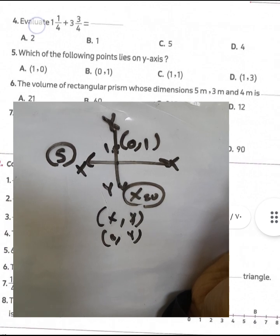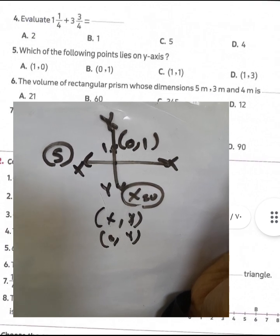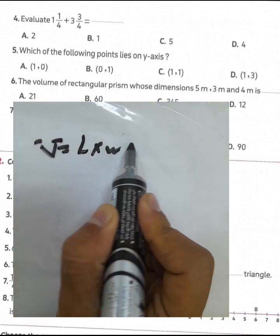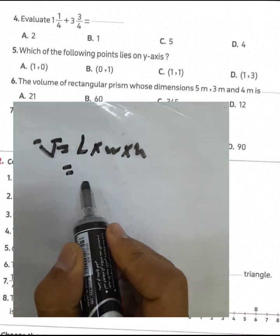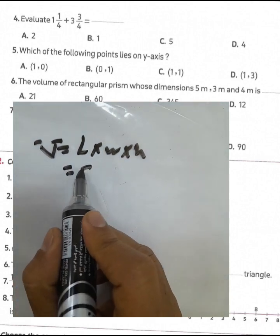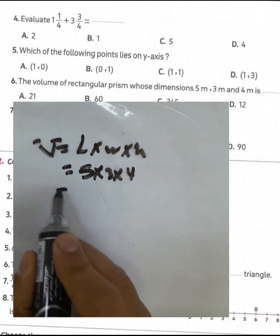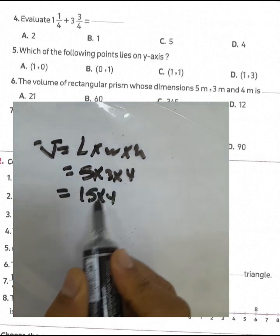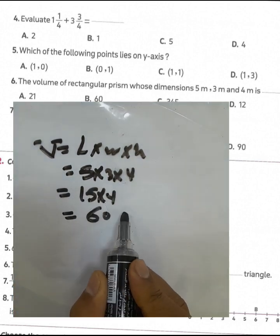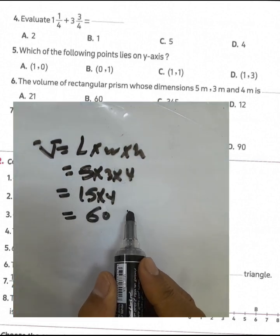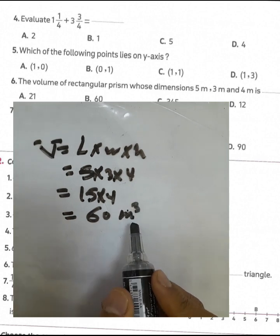Question number 6: the volume of a rectangular prism with dimensions 5, 3, and 4. We find the volume as length times width times height. The volume equals 5 times 3 times 4. 3 times 5 equals 15, and 15 times 4 equals 60.